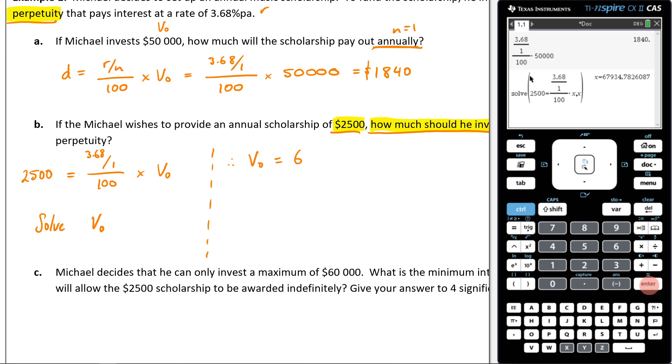And my answer is going to be, oh, what is that? 67,934.7826... Remember, write it unrounded, and then you can say, therefore, he should invest money symbol $67,934.78. That's how much he should invest.